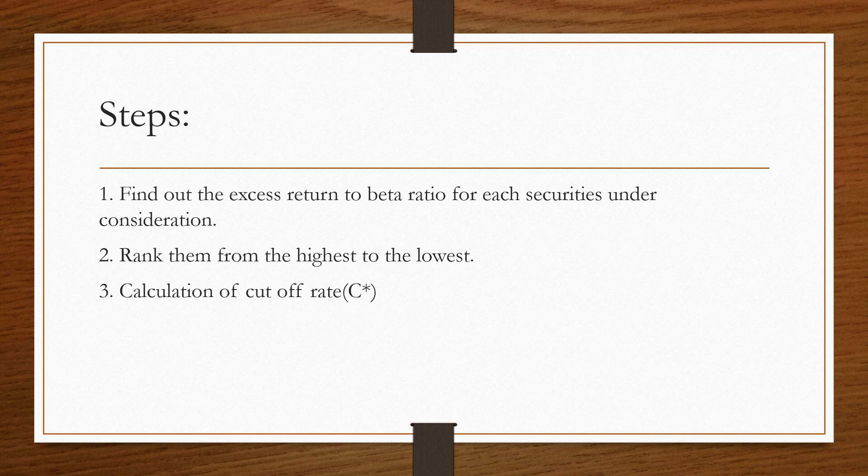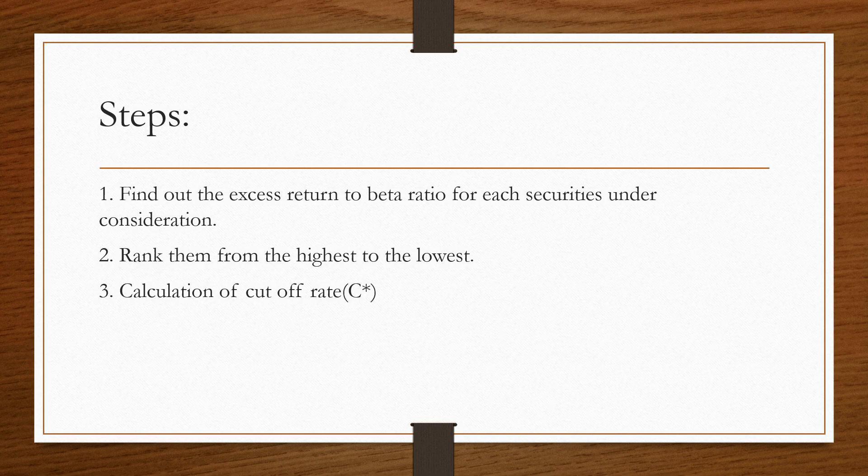Next step is ranking them from the highest to the lowest. Usually, the portfolio managers would like to include those stocks with higher ratios. This ranking of the stocks are done on the basis of their excess return to beta ratio.